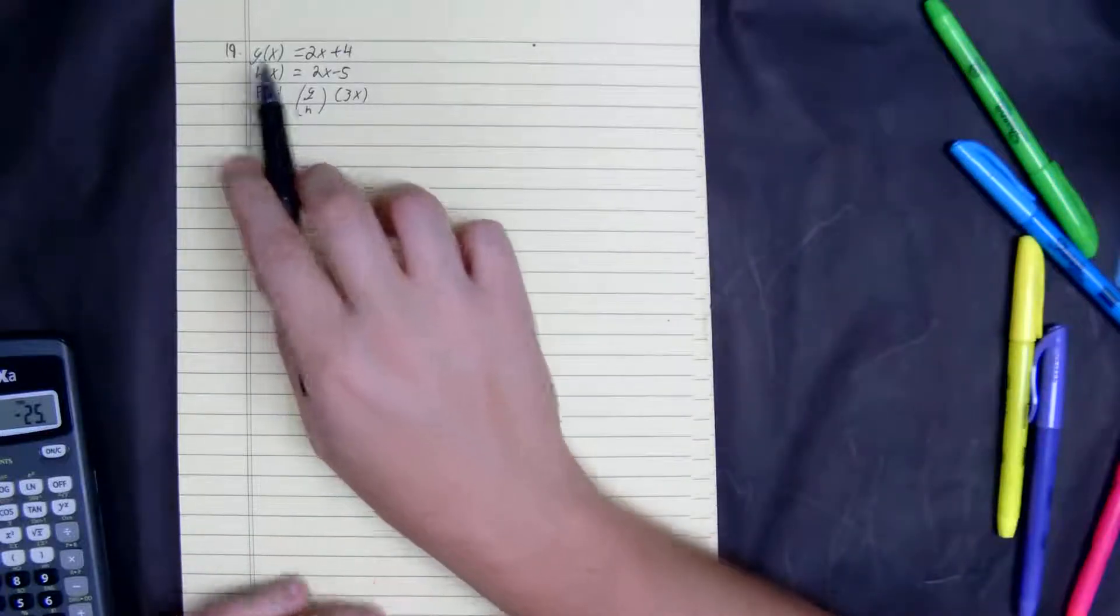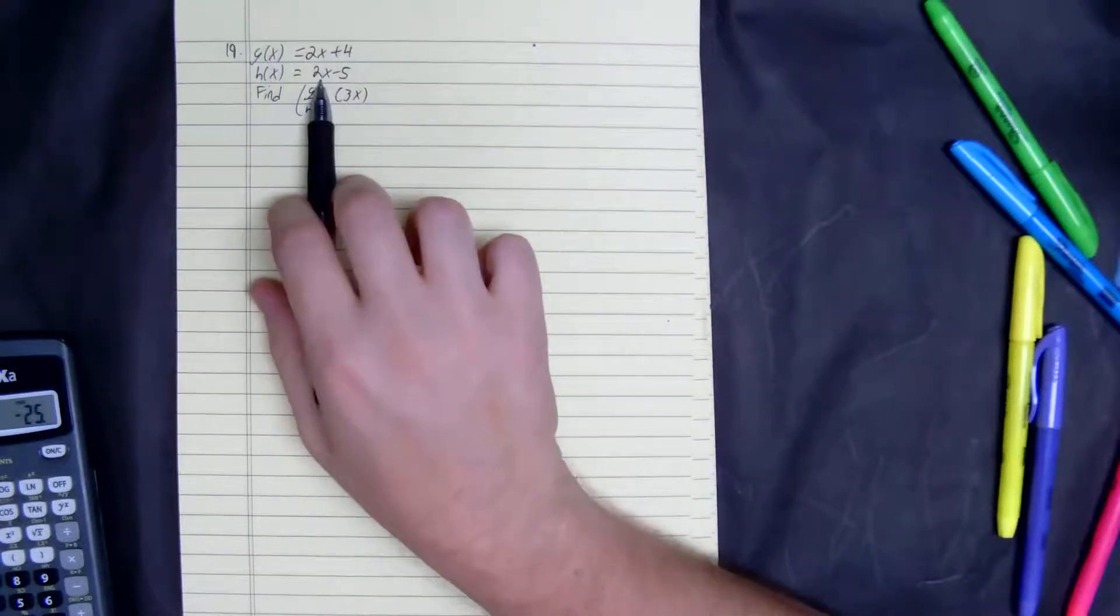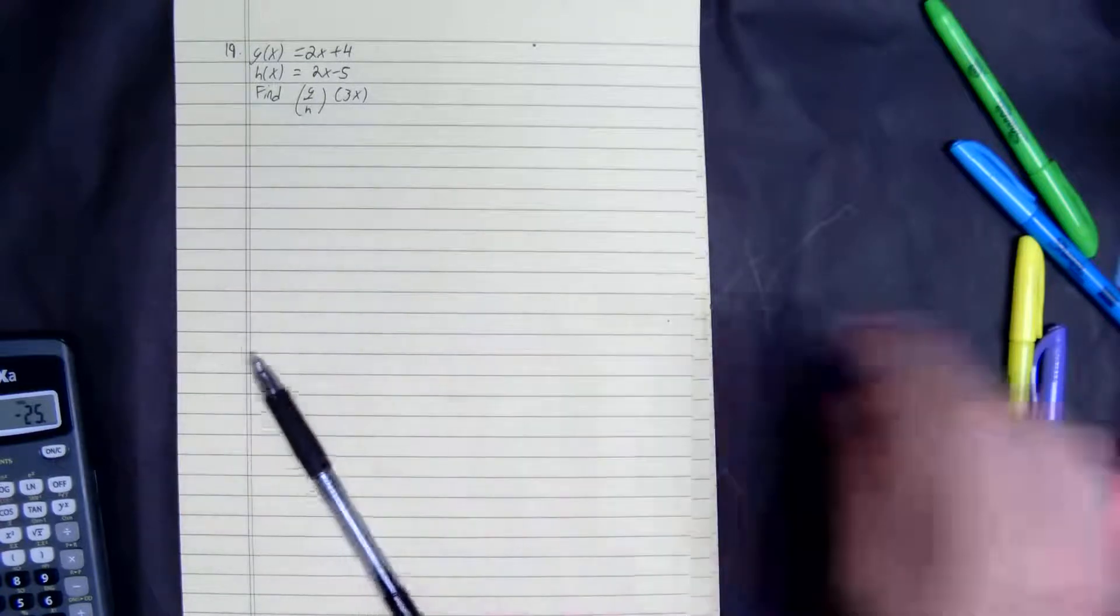We'll get number 19. g of x, h of x, we're going to find g divided by h, evaluated at 3x.